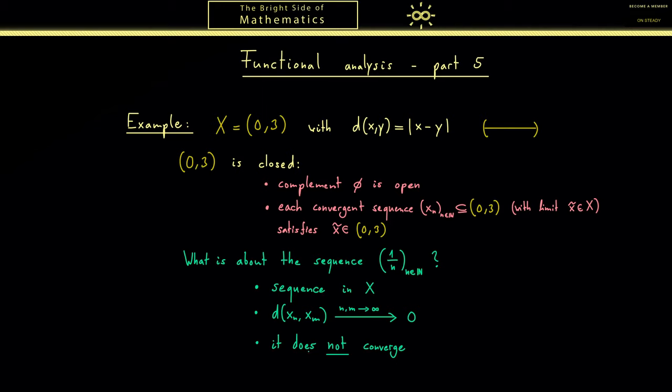However, still it does not converge. For our example this is easy to see because the only possible limit this sequence could have in the real numbers would be the number 0. However, 0 is not in X.